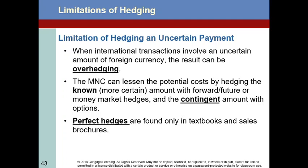One thing worth noting is that forward contracts typically appeal more to larger institutions because they're more cost effective that way. Smaller institutions, rather than incur the costs of negotiating forward contracts, are typically going to be able to make better use of futures and options — those publicly traded securities.